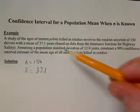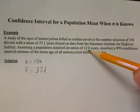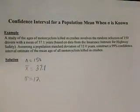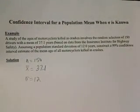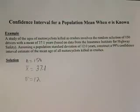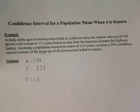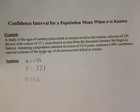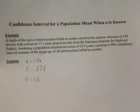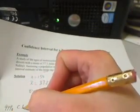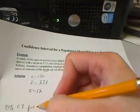Reading along, we're assuming that the population standard deviation, also known as sigma, is 12. We want to construct a 99% confidence interval estimate for the mean μ, which is the mean of all motorcyclists killed in car crashes. So we want to find the 99% confidence interval for μ.